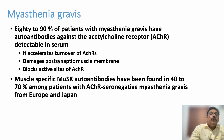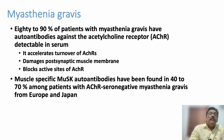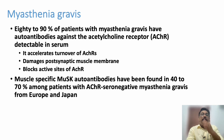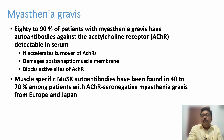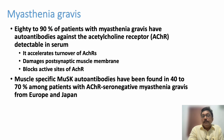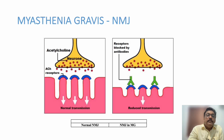Different antibodies can be produced in myasthenia gravis, mainly acting against acetylcholine receptors — these can be detected in the blood. Anti-MuSK antibodies can also be seen in many patients. In some patients we don't find any antibodies; we may not be able to detect them, or different antibodies may be present.